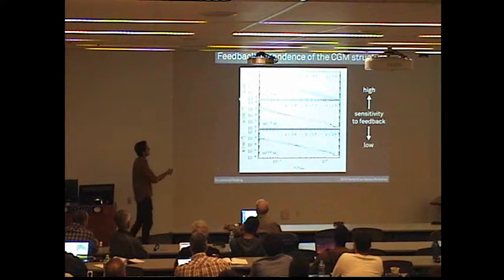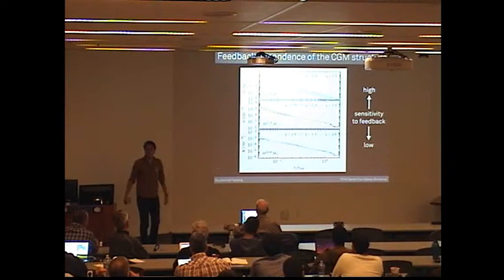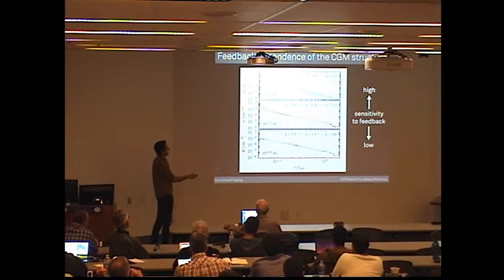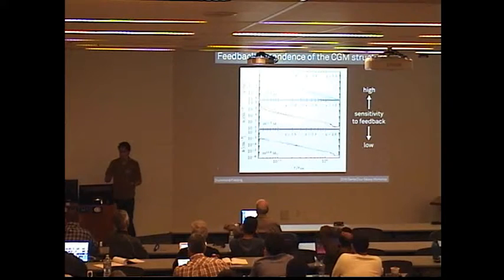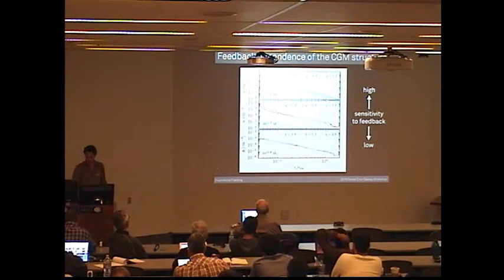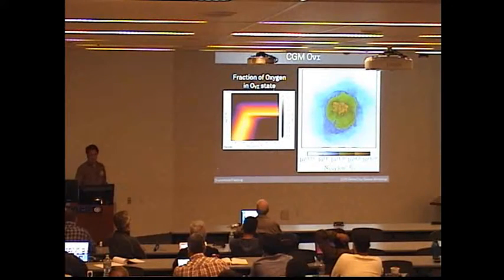So maybe I'll touch on this just very briefly. If we look at the number density profiles of the different halos from 10 to the 11 to 10 to the 12, as expected, what we just saw in that movie, there's a much higher sensitivity to feedback. In fact, each line is a different feedback model. You can see in the 10 to the 11s, there's far more sensitivity than in the 10 to the 12s, sort of as expected and very similar to what Cameron just showed us.